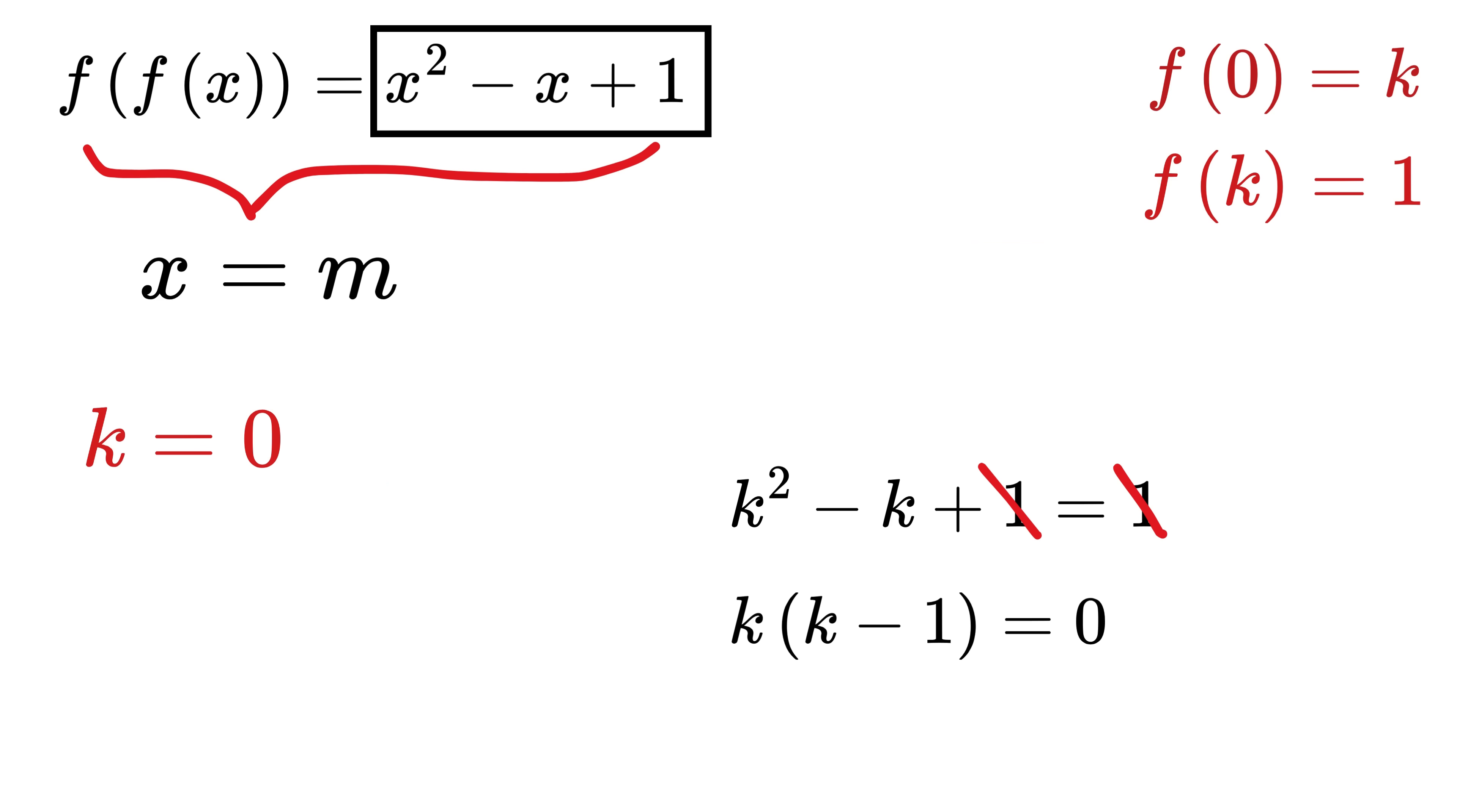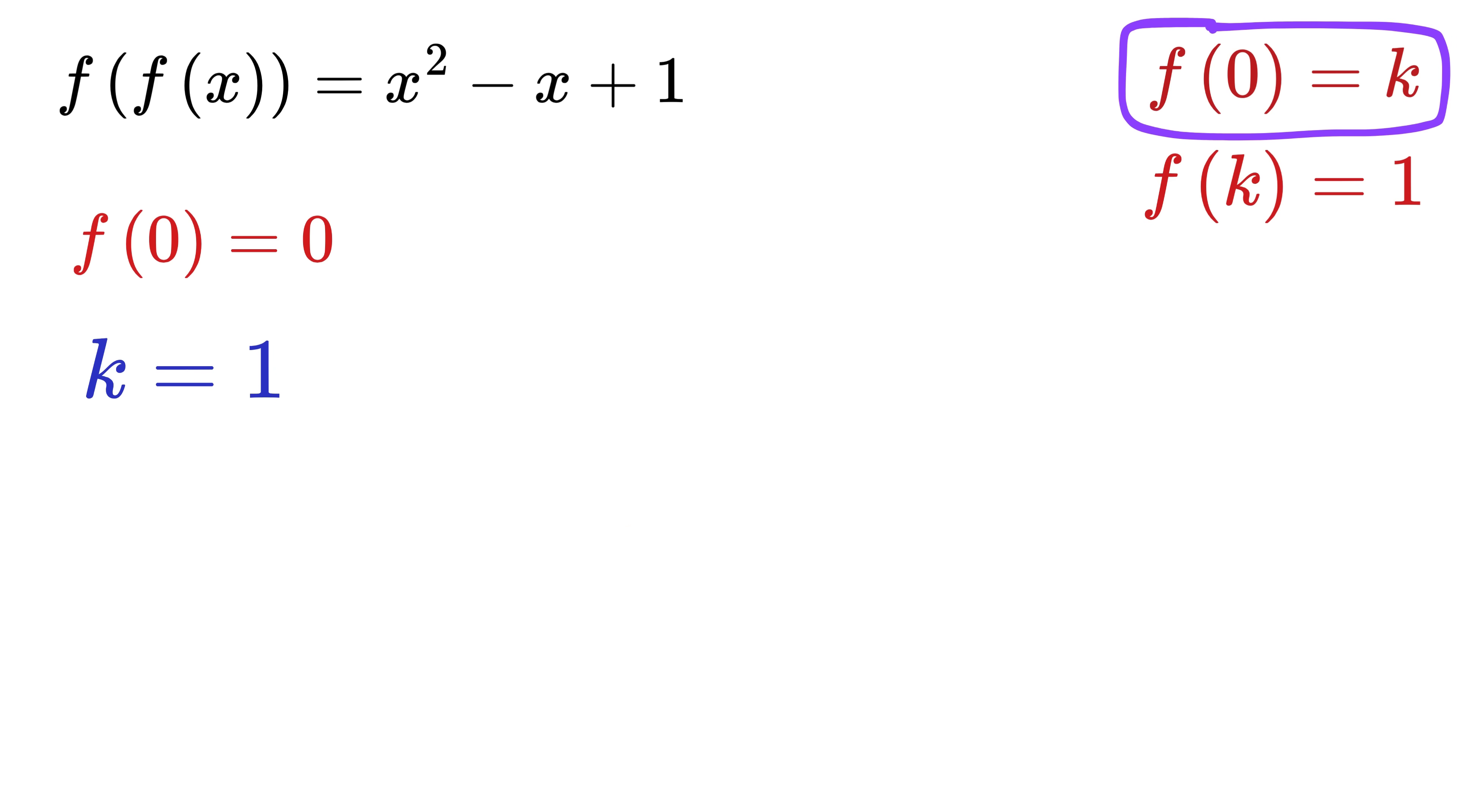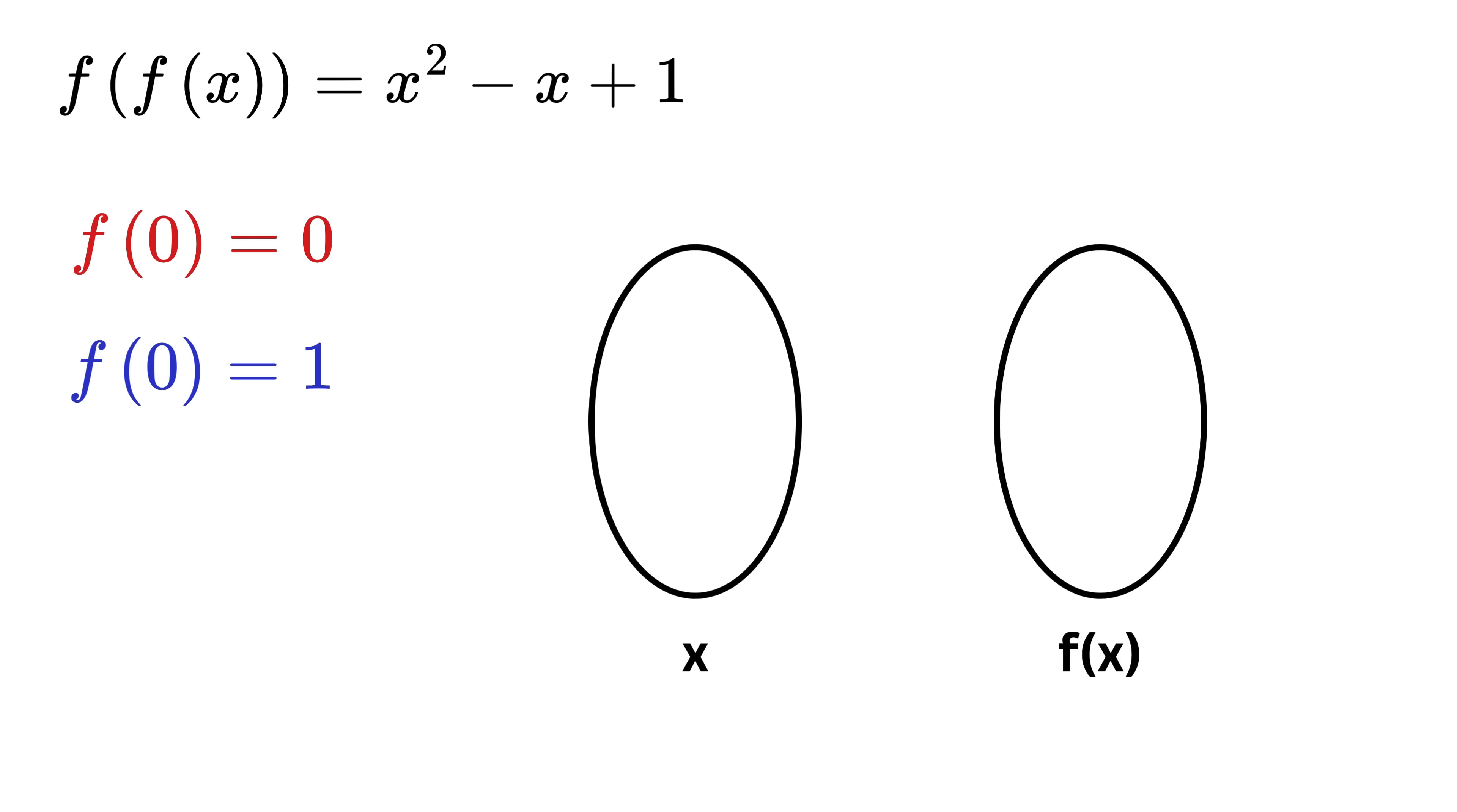This means either k equals 0 or k equals 1. And you might think that we are done. Since k equals f of 0, this means f of 0 is 0 and 1. This means we have two different values of f of 0. But here's the twist. That can never happen because a function has to be well-defined, which means if you have one input, then it cannot have more than one output. This is not valid. Therefore, this means that f of 0 is either 0 or 1, but not both.